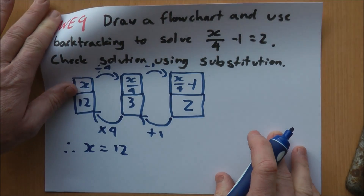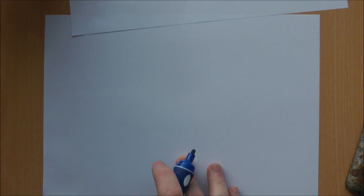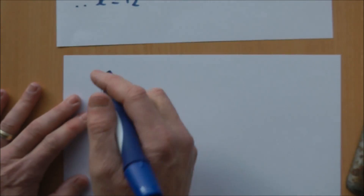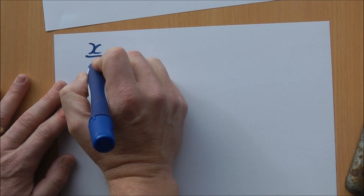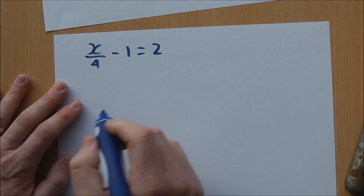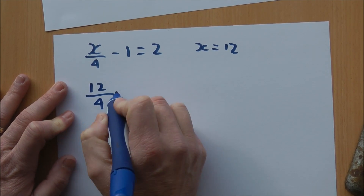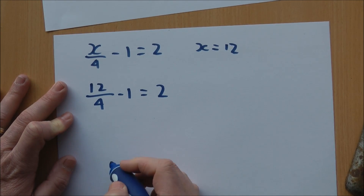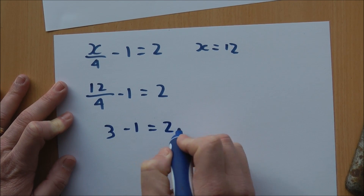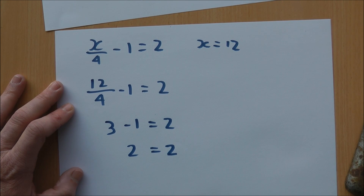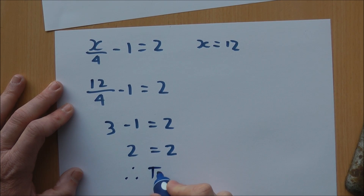Now we need to check the solution by substitution. I know x equals 12. My equation was x over 4 minus 1 equals 2. I put 12 in where there's an x: 12 over 4 minus 1 equals 2. 12 divided by 4 is 3, minus 1 equals 2. The left hand side equals the right hand side, therefore it's true — we know we've got the right solution.